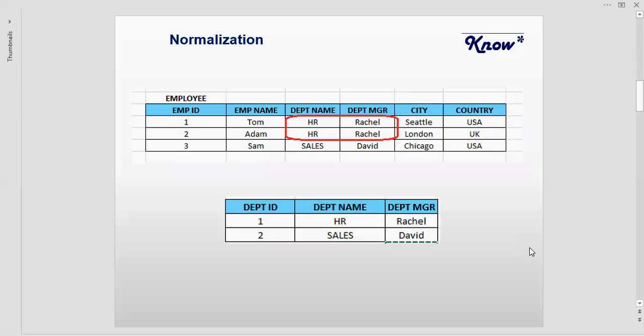The way to avoid this redundant data is to create a new table called department. This department table will have all the columns related to that department — so for each department, one row with all the attributes that define it. I have taken the department name and department manager from the original table, and I have now generated a primary key called the department ID, which is a numeric value that is auto-generated and auto-incremented.